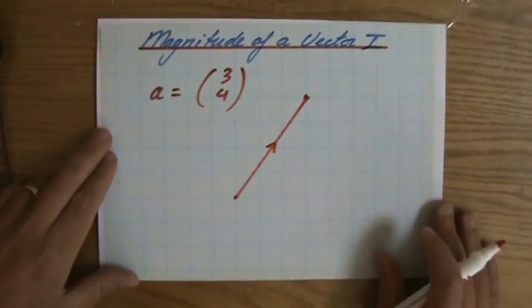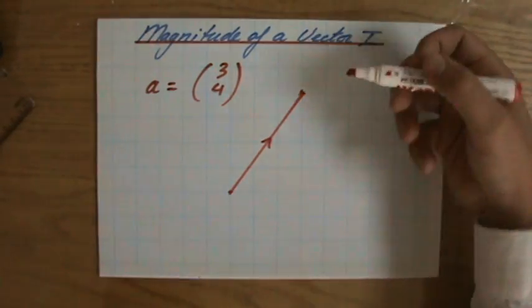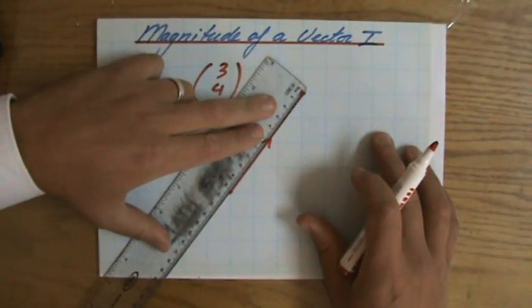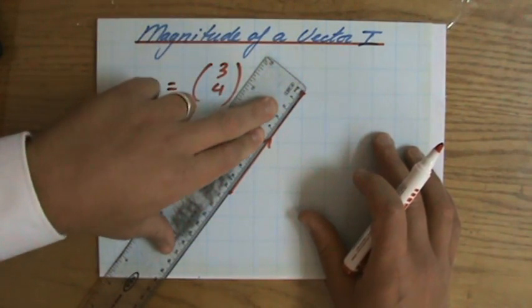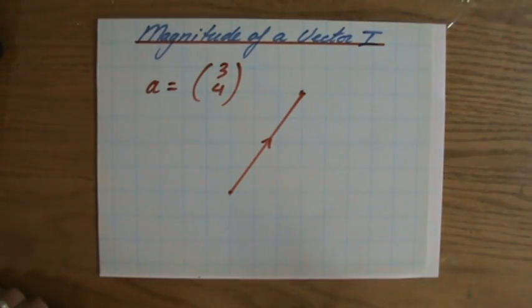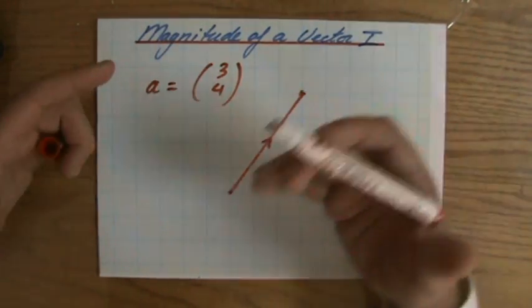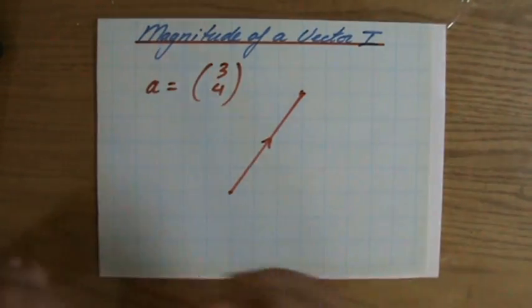And now we're going to calculate the magnitude. So how long is it, if you like? Well, of course I could measure that, but that is not the same as calculating or finding out, and it's also not very accurate. But how can I calculate it? That's what I'm going to tell you now. What if you learned in the past about calculating lengths? Do you have any strategies, any theories of calculating lengths?